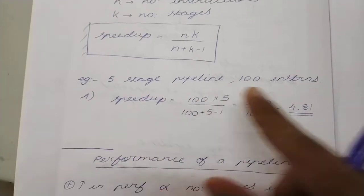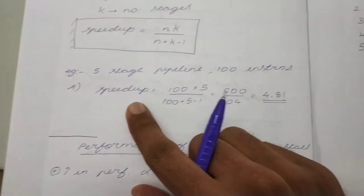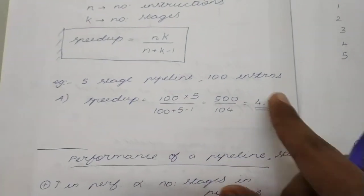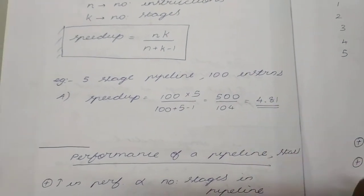For example, for a 5-stage pipeline and 100 instructions, the speedup we calculate as 100 into 5, n into k, by 100 plus 5 minus 1, 104. So that will come out as 4.81.